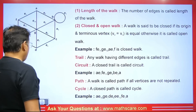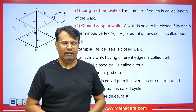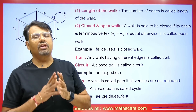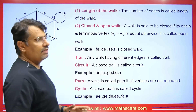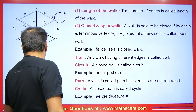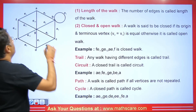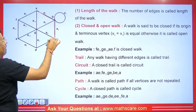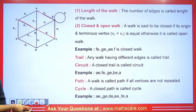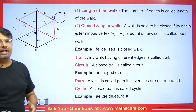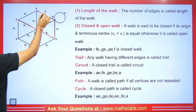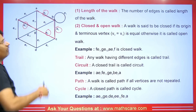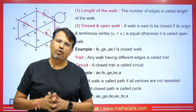Now let's talk about the length of a walk. If we are taking a walk, the number of edges that we cover is called the length of the walk. For example, if I start from here and traverse edges — 1, 2, 3, 4 — then the length of this walk is 4.